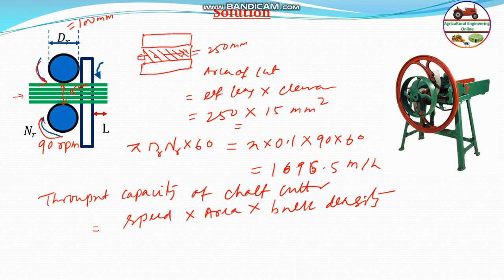Therefore, the speed is 1696.5 meter per hour into area is 250 into 15 millimeter square. To convert millimeter square to meter square you have to multiply by 10 to the power minus 6. Make sure that everything is in correct units, and the density is given that is 250 kg per meter cube.